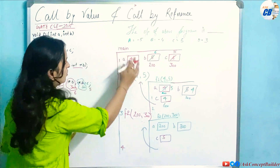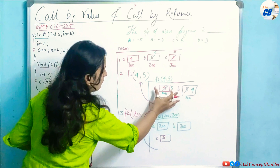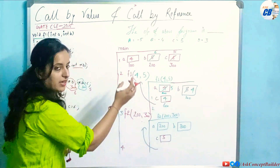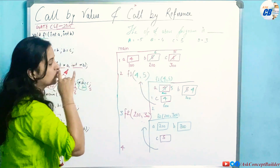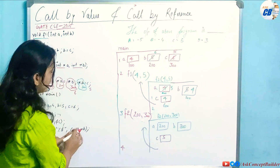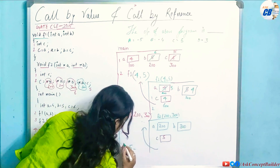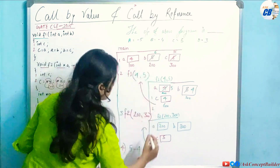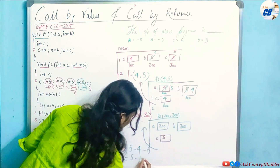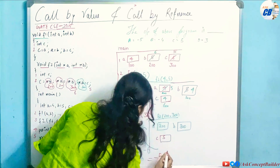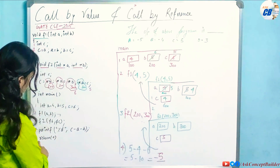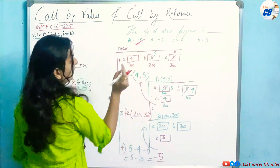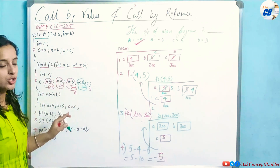Now the fourth statement of main executes: printf("%d", c - a - b). The variables inside f1 and f2 had their own scope, so we use main's a, b, c. c is 5, a is 4, b is 6. So c - a - b = 5 - 4 - 6 = -5. The output of the program is -5, which corresponds to option A.